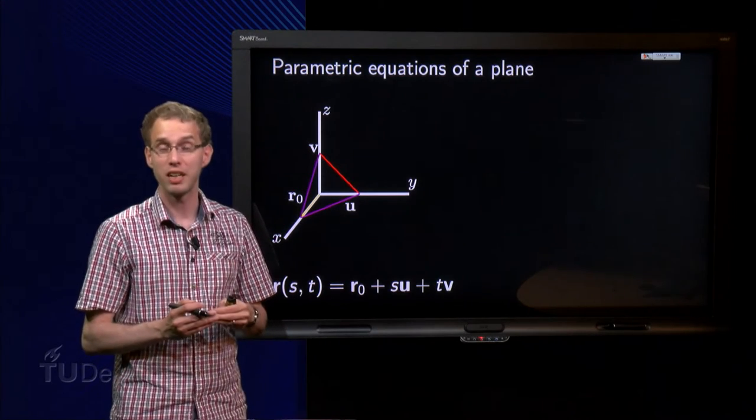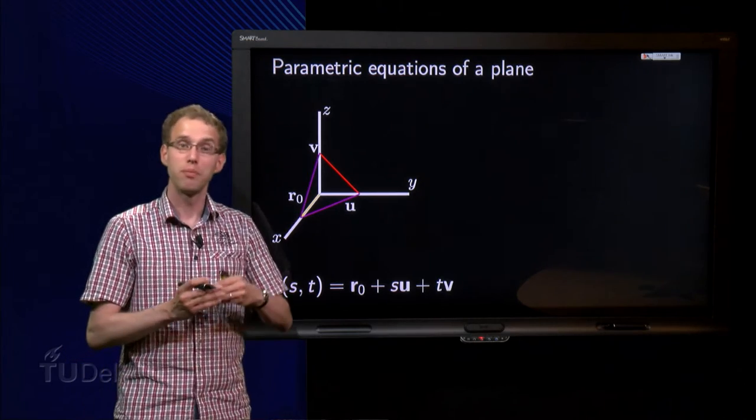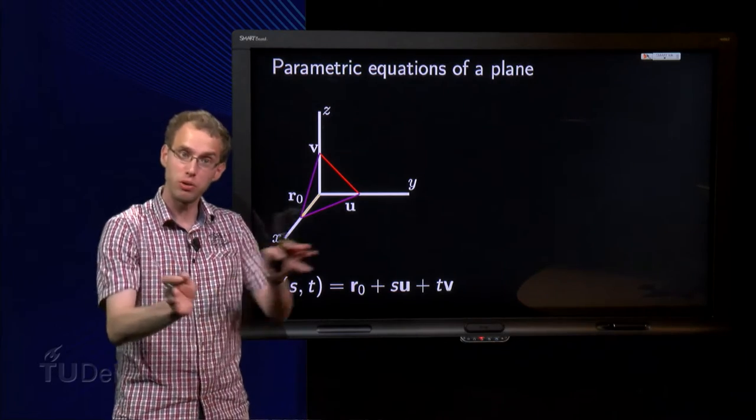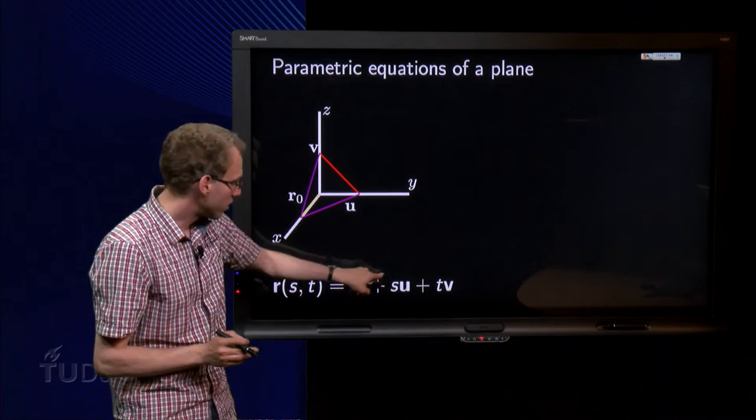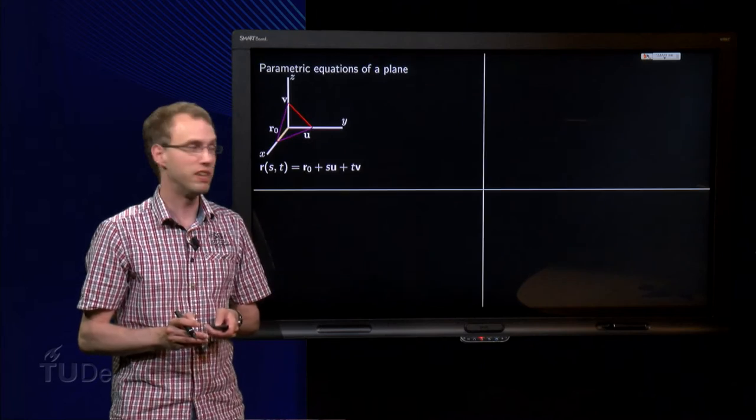What is the parametric equation of a plane? I can reach any point in the plane by taking R of s and t, two parameters. We can go in two directions. First you go to R0, and then you travel some distance in the u direction, and some distance in the v direction.